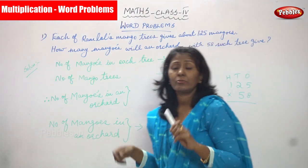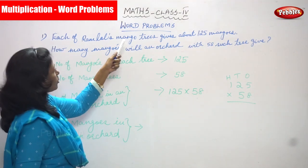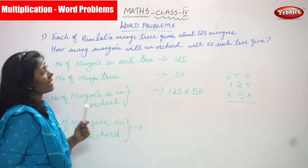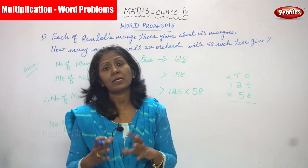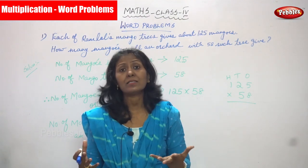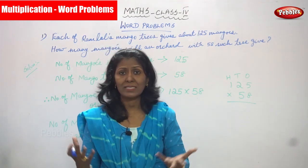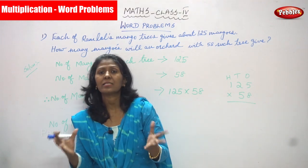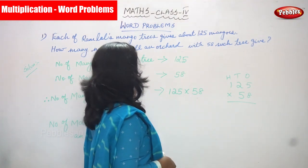So what is the question? First I'll explain the question. Each of Ramlal's mango trees gives about 125 mangoes. Ramlal is an orchard owner. An orchard means a lot of fruit trees, different kinds of trees combined in a particular place — that is called an orchard.